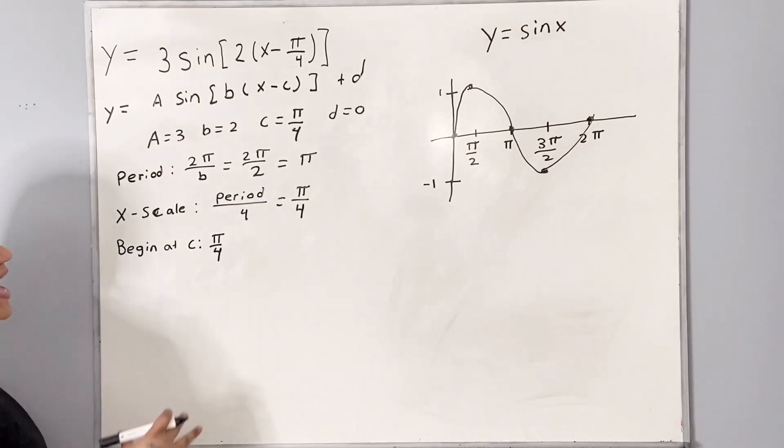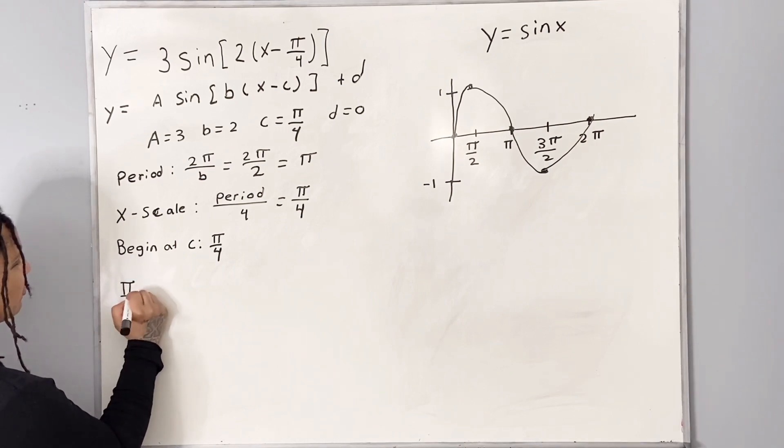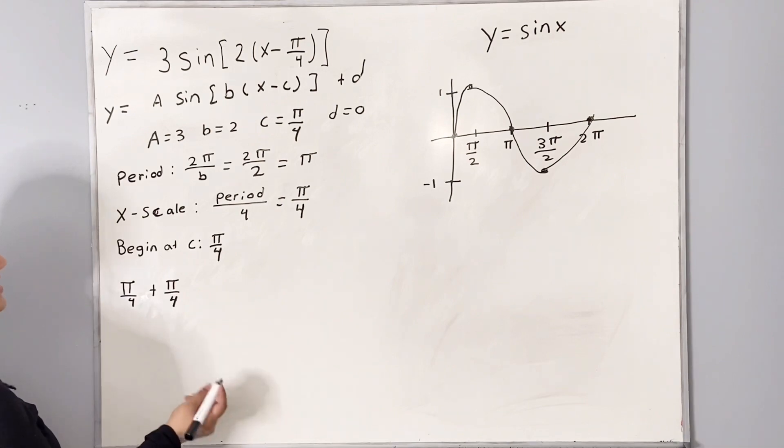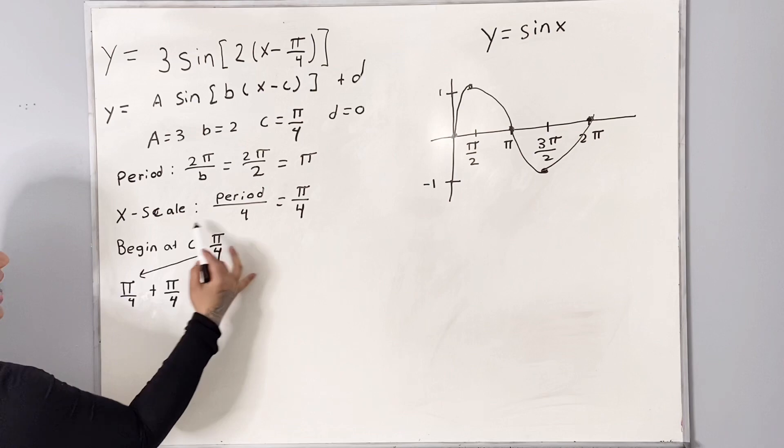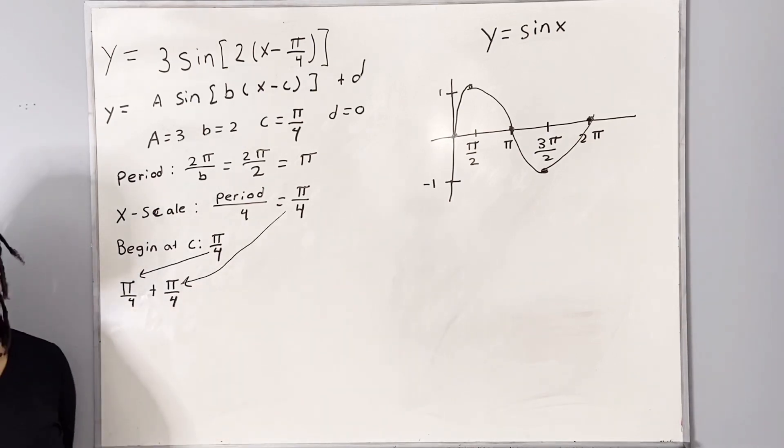And now we're going to add increments of pi over 4 on our scale. So starting at c, we're going to say pi over 4 plus another pi over 4. So c will be the first pi over 4, and we are adding increments of pi over 4, which is the second pi over 4 here.